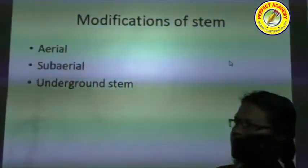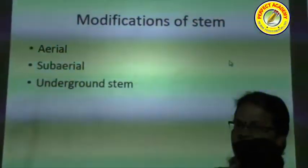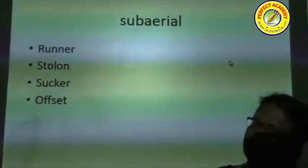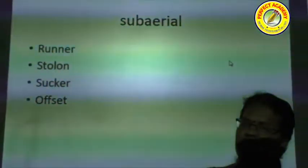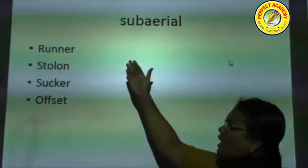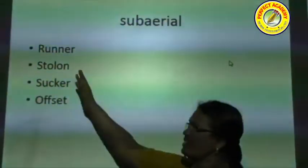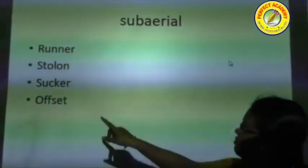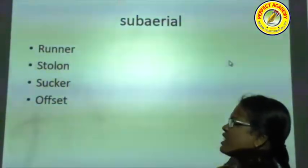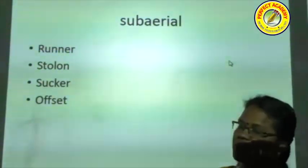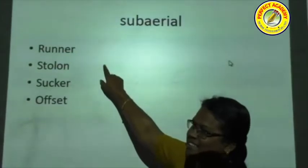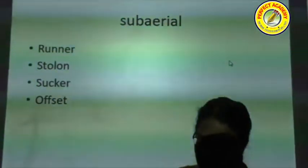Modification of stem comes under the secondary function and is classified into aerial, sub-aerial, and underground modifications. Sub-aerial modification means half the stem is in the soil and the remaining part is above the soil. Sub-aerial modifications are further classified into runner, stolon, sucker, and offset. A runner (called oduthandu in Tamil) runs to some distance along the ground — examples are pumpkin and Chrysanthemum.